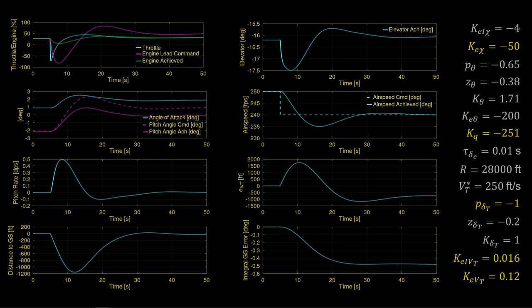The updated gains: we reduced the airspeed gains to bring the throttle and engine within limits. We changed the airspeed lead compensator pole to help with transients, and increased damping in the pitch loop. We also increased the glide slope loop gains by 20%. The result is slightly lower performance but with improved transients while not exceeding engine limits. The downside is that airspeed overshoot has increased — not due to large airspeed PI gains, but exacerbated by the increased glide slope gains. With further tuning, we could find an even better compromise.